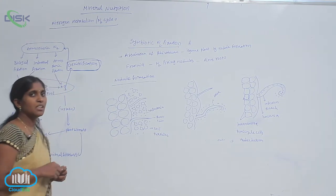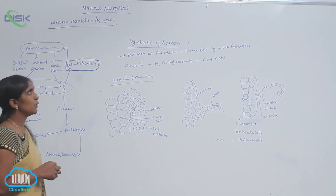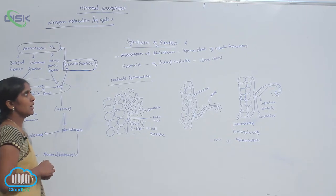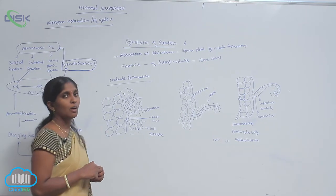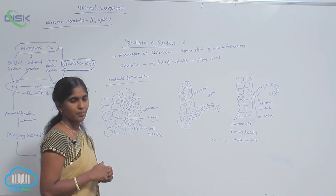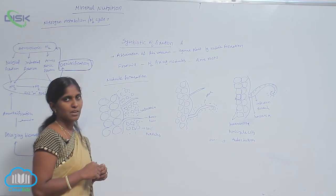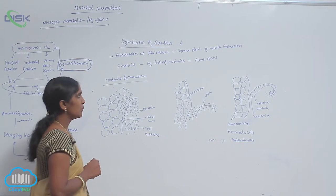Franchia is another symbiotic nitrogen fixation bacteria, but it fixes the nitrogen in non-legume plants. It means it is symbiont with non-leguminous plants. That is alnus.